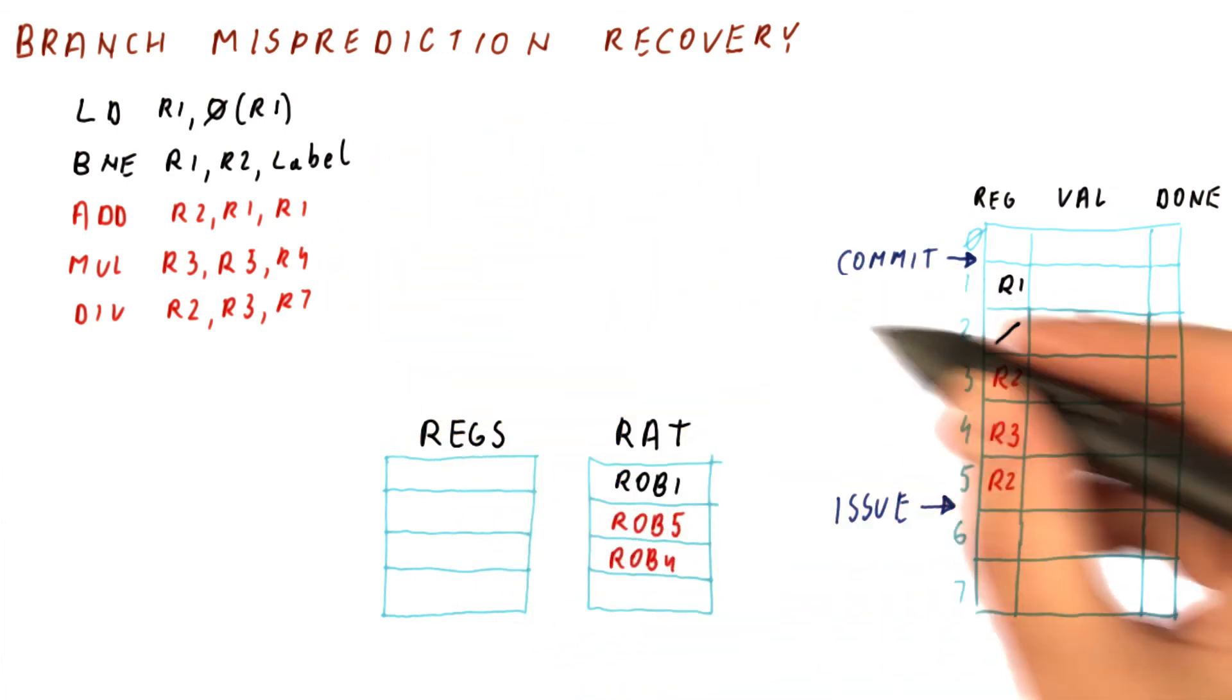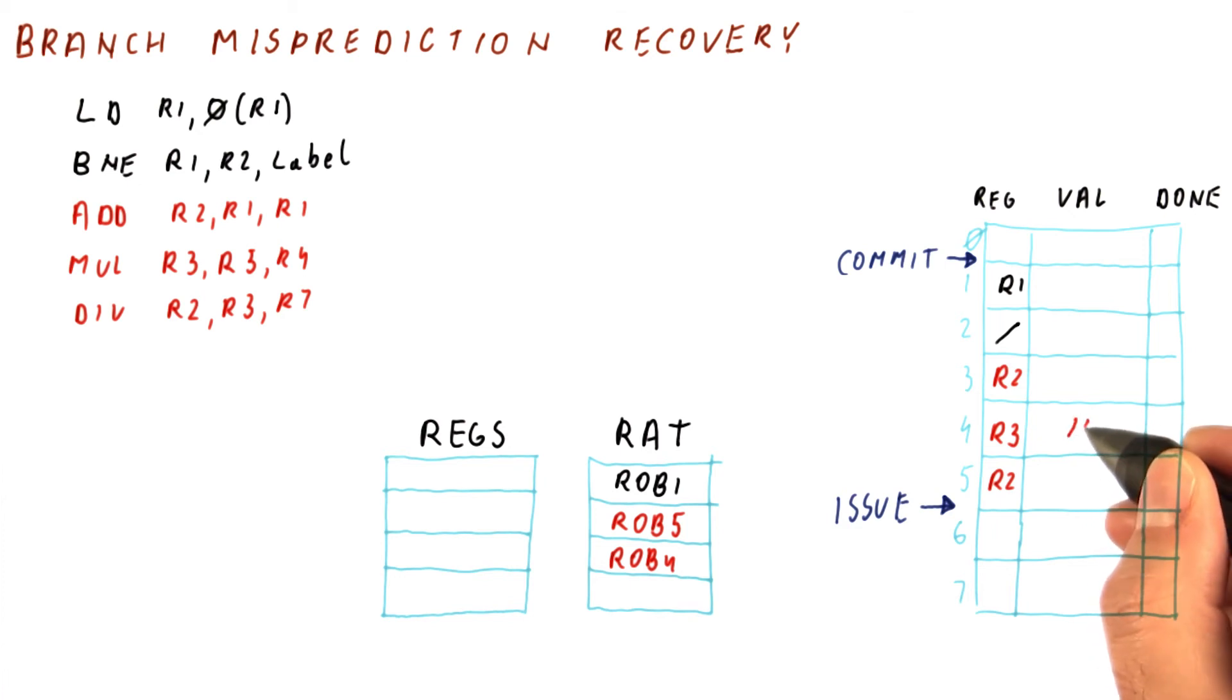In a ROB-based processor, the result of the multiplication goes into its ROB entry, and it's marked as done.